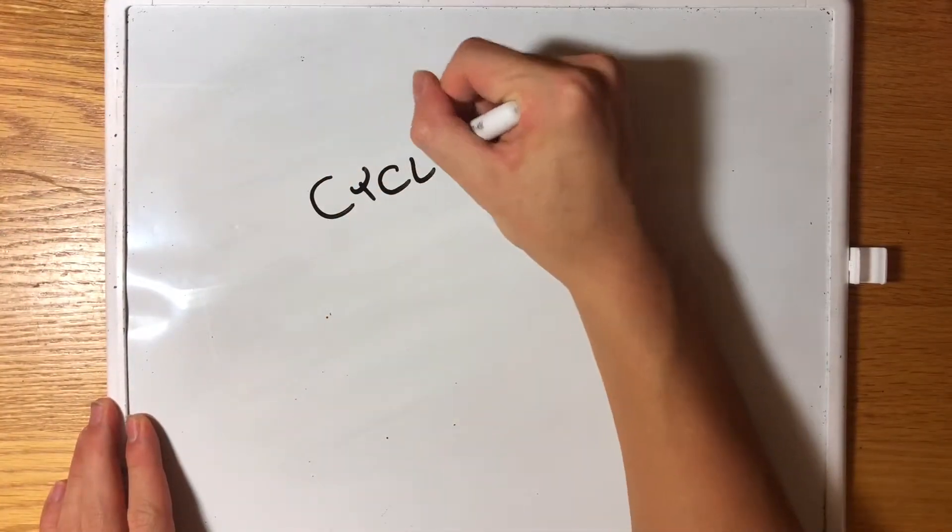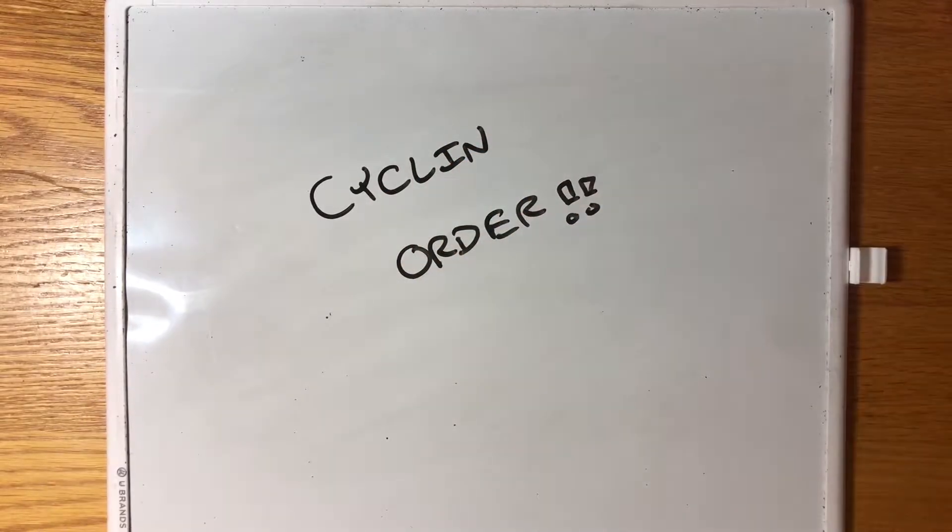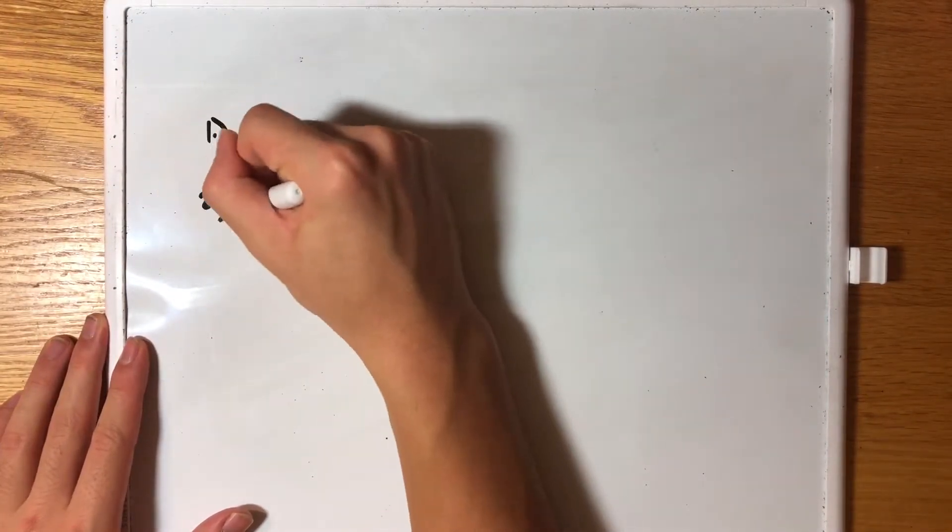Hey guys, okay so today we're going to talk about the order that different cyclins appear in the cell cycle and how to remember that easily. There are four main types of cyclin: D, E, A, and B.